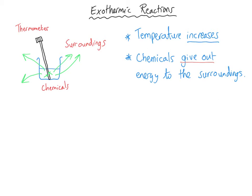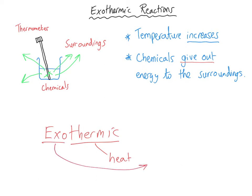A nice trick to help you remember whether something is getting hotter or giving out energy to the surroundings is the actual name of the type of reaction. An exothermic reaction has two parts to its name: the 'thermic' part, which means it is to do with heat, and the 'exo' part, which is like 'exiting'. So heat exits the chemicals — that's how we recognise an exothermic reaction. Heat exits the chemicals and the temperature increases.